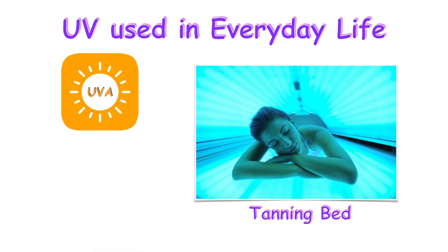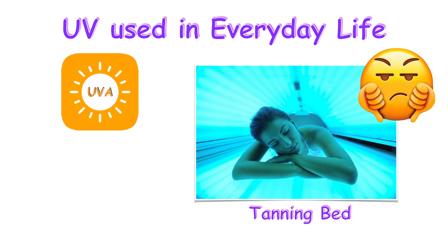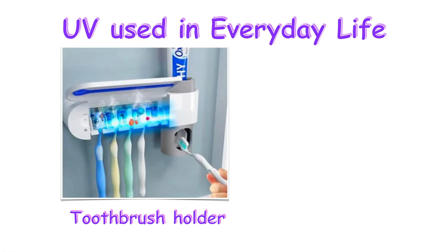Still, many people continue to tan thinking that it makes them look healthy. UVC light can be used to clean and kill bacteria on your toothbrush. Simply put the used wet toothbrush into the holder, close the lid, and then the UV light goes to work.